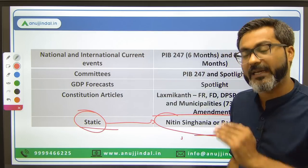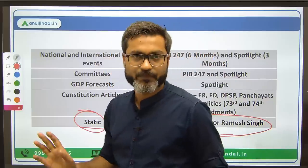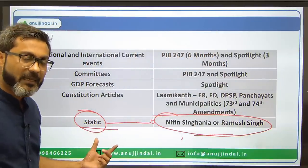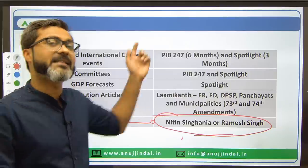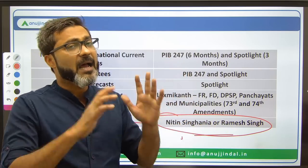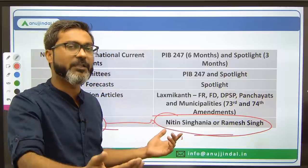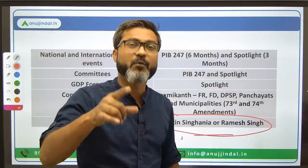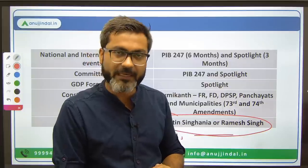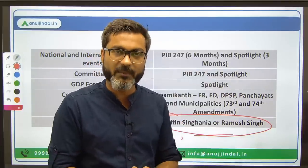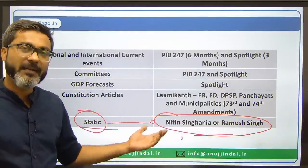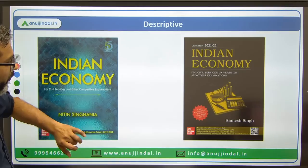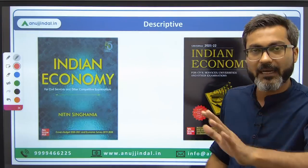You can even leave the static part if you are short on time, because the idea is not to score 100 percent — the idea is to score 30 plus marks. If you cover the other areas well, you can score 35 marks. If time is short, give this static part the least importance. However, it is very important for the descriptive portion. I recommend covering it now, because after phase one you won't have much time — you'll be busy with descriptive answer writing practice and revision.